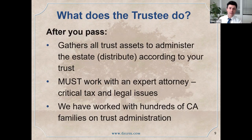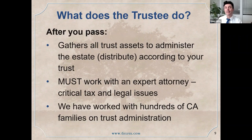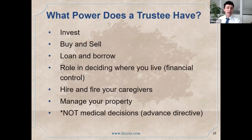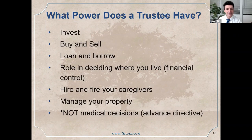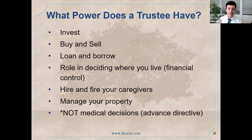After you pass away, the trustee's job is to oversee the distribution of your assets according to the trust terms, and to comply with all the legal and financial issues that they face. They have to hire a lawyer to do this — don't try this at home. Our firm works with hundreds, if not thousands, of families on the administration of estates after people pass away. The powers the trustee has are pretty wide: they can invest, buy and sell, loan and borrow. They have a role in deciding where you live because they control the purse strings. They can hire and fire caregivers. They don't make medical decisions — that's in your advance directive — but they control the purse strings, which definitely can relate to medical care.